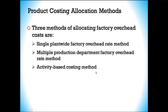Keep in mind that what we're allocating here is overhead. Direct materials and direct labor aren't hard to connect to a product — we know how much direct materials go into a product and how much labor it takes. It's the overhead, those indirect costs, that are so difficult to assign. That's what we're talking about here.